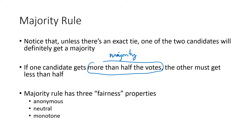Majority rule has three fairness properties. It's anonymous, neutral, and monotone. These are vocabulary words I'm about to define, and they're going to be criteria that we use to measure lots of different voting methods.